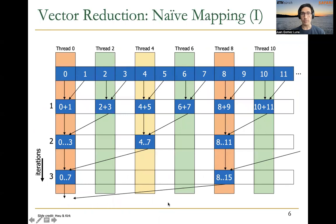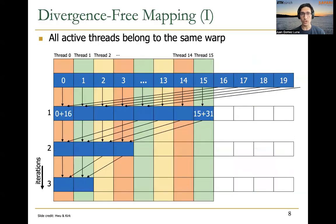There is a naive way of implementing the vector reduction that may end up having a lot of warp divergence or SIMD underutilization, which is not good for performance. For that reason, we also explained a divergence-free mapping where the active threads all belong to the same warp or to multiple different warps while the reduction is making progress. This way we have higher SIMD utilization and, in the end, higher performance.